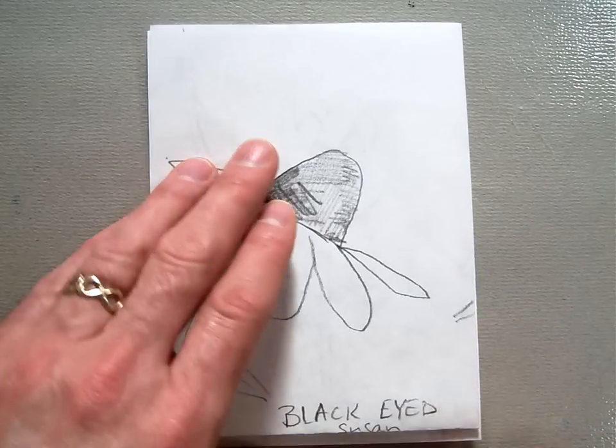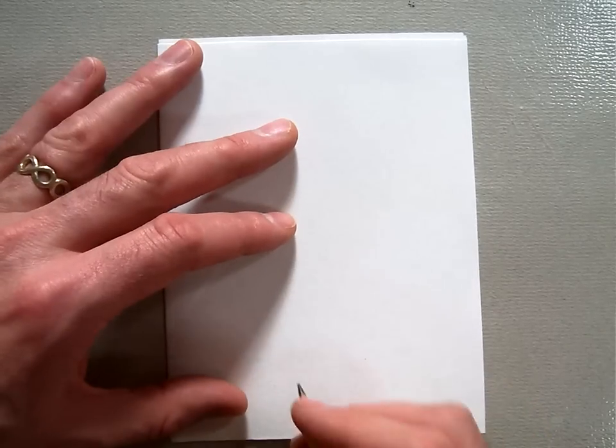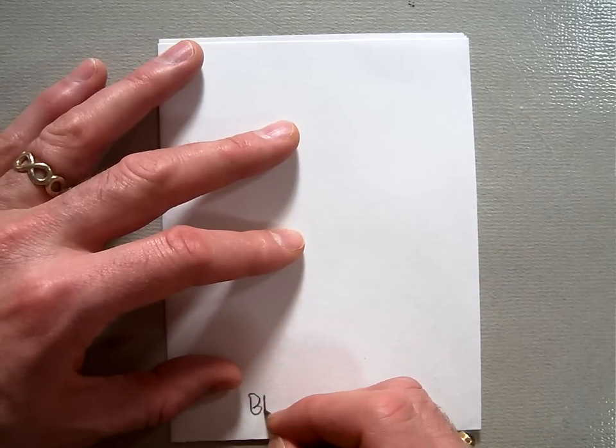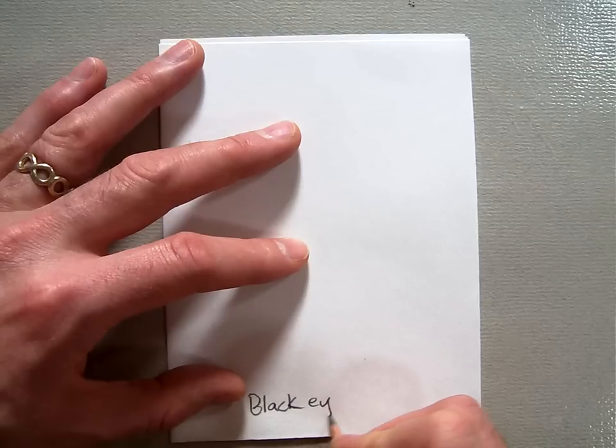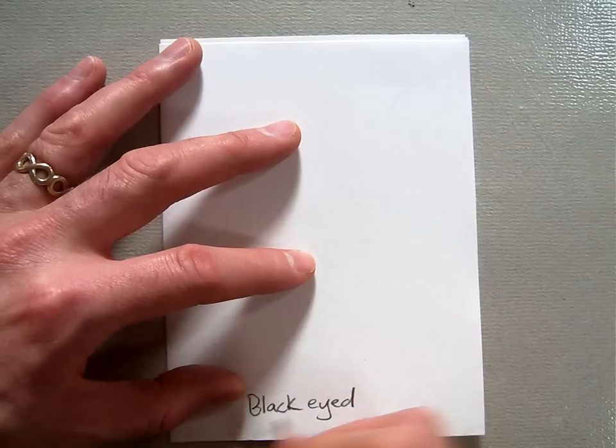So what we're going to do is we're going to start by writing the name down, and you're going to write black-eyed Susan.